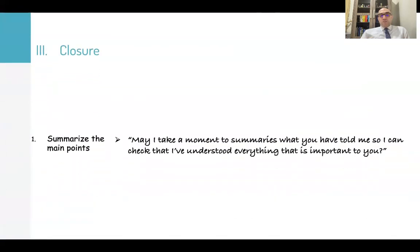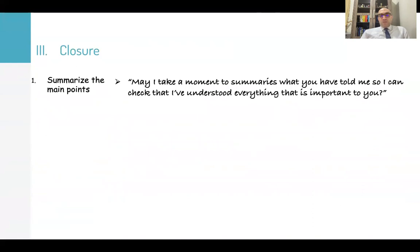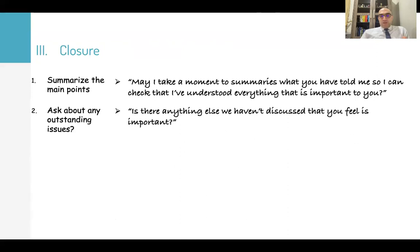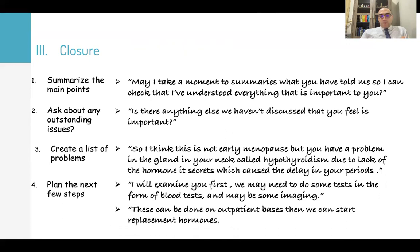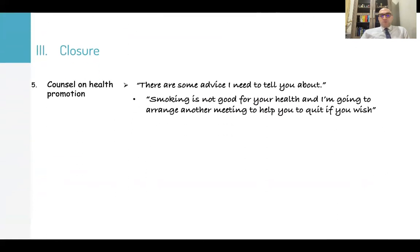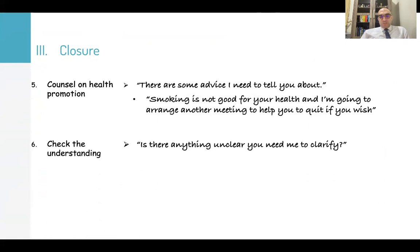At the end of the station, go to the closure — starting with summarizing the main problem: 'May I take a moment to summarize what you have told me so I can check that I have understood everything important to you? Is there anything else we haven't discussed that you feel is important?' For example: 'I think this is not early menopause, but you have a problem in the gland in your neck called hypothyroidism due to lack of the hormone it secretes, which is causing a delay in your period.' Then outline the next steps: 'I will examine you first. We may need to do some tests in the form of blood tests and possibly some imaging. This can be done on an outpatient basis. Then we can start replacement hormones.' Don't forget to counsel on health promotion: 'Smoking is not good for your health and I can arrange a meeting to help you quit if you wish.' Check understanding: 'Is there anything unclear you need me to clarify?'